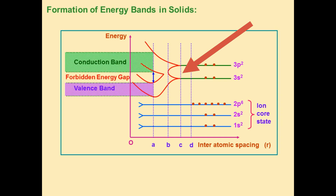When r equals OC, the atoms come further closer and interaction between the atoms increases. In this case, outermost shell electrons interact very strongly with the other atoms, so there may be splitting of energy levels. The arrow-pointed region in the graph shows exactly that.